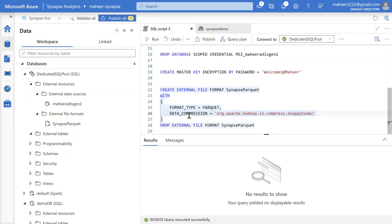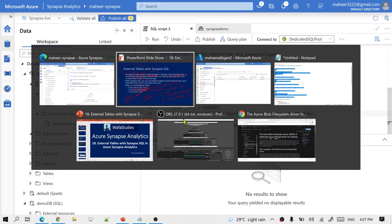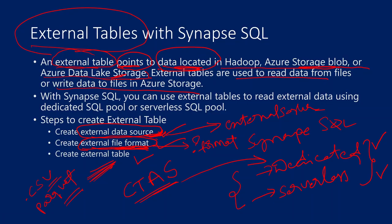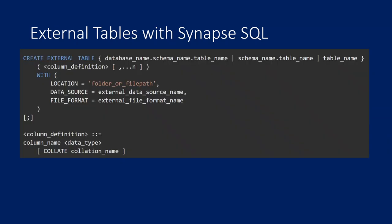So the first step of creating the external data source is done. The second step of creating the file format is also done. Now we have to create an external table. To create an external table, this is the syntax to follow: create external table, give a name, then define the columns similar to how you use a SQL statement to create a table.